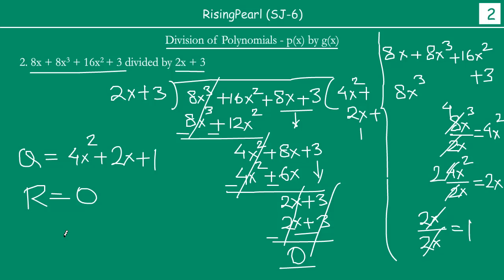So in example 2, the quotient is 4x² + 2x + 1, and the remainder is 0. The key lesson here is that before we do the actual long division process, we must make sure the terms are arranged in standard form — the highest power of the variable first, decreasing to the lowest power at the right — and then we continue with the division process.